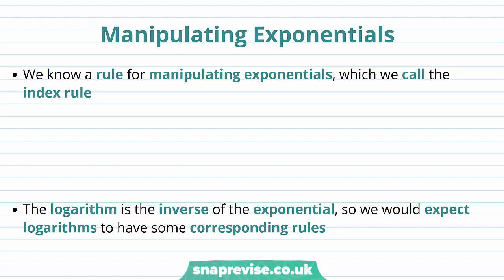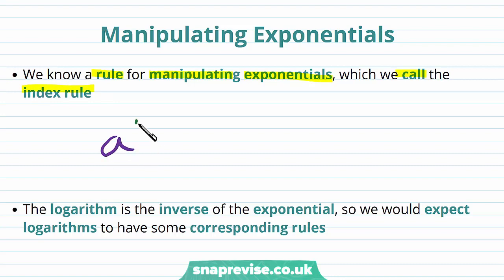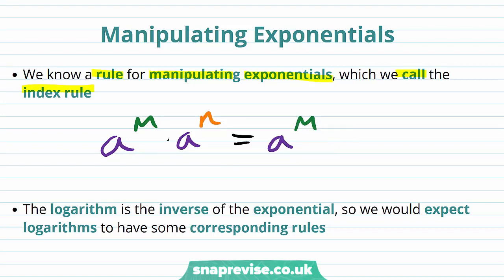So how can we use the manipulation of exponentials in order to manipulate logarithms? We know a rule for manipulating exponentials, which we call the index rule. In particular, if we have a to the power of m, and we multiply by a to the power of n, this gives us a to the power of m plus n.